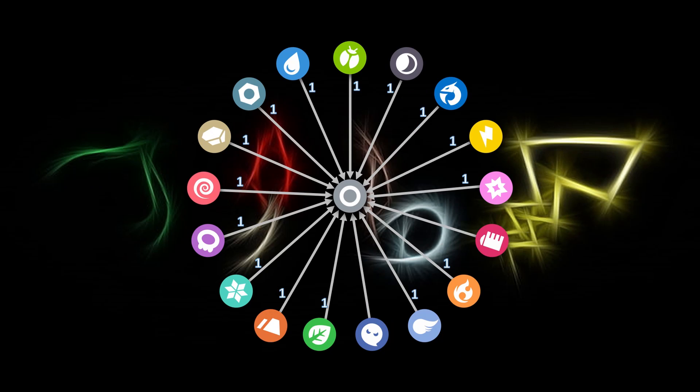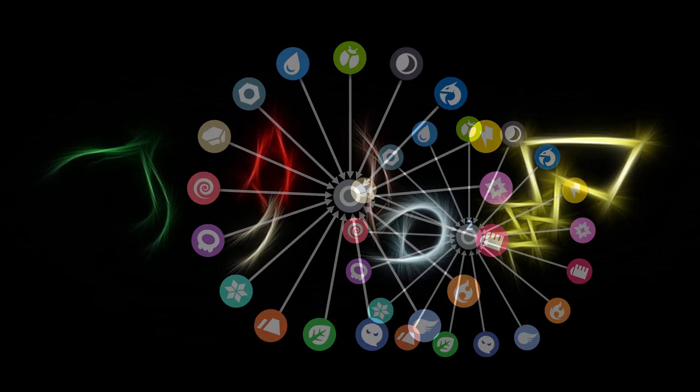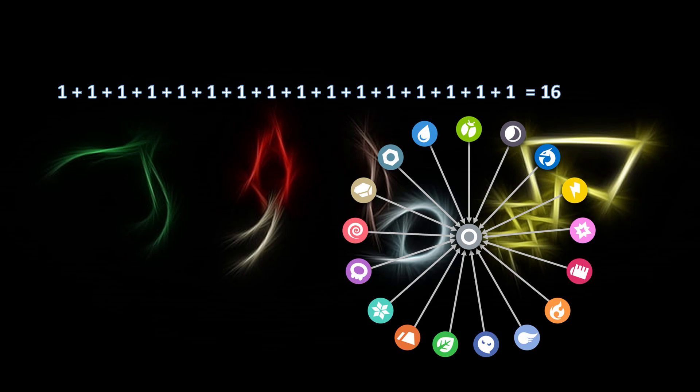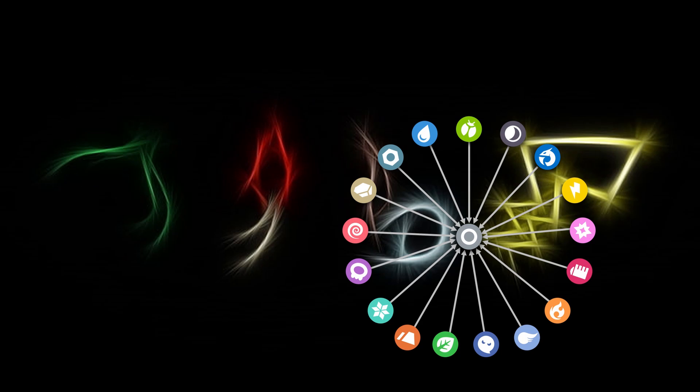What about defensively? Normal takes everything neutral, doesn't get affected by ghosts, takes double from fighting. So everything is a one — that's 16 — plus zero from ghosts, plus two from fighting — 18 total. So you have 16 offensive value, 18 defensive value. I subtract offensive from defensive, because you want a lower defensive value — it means the type resists or is immune to a lot — and a higher offensive value. That compound score lets me rank the types.